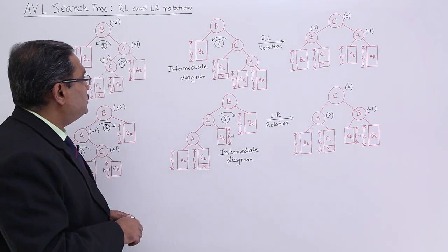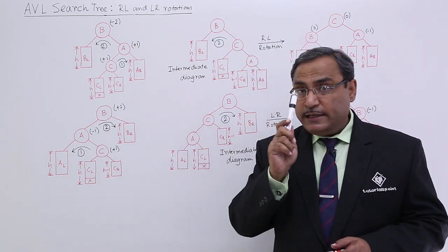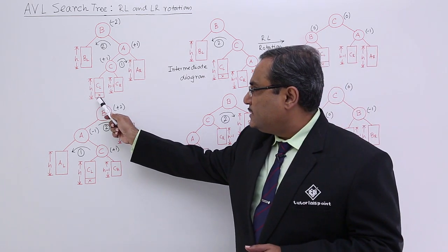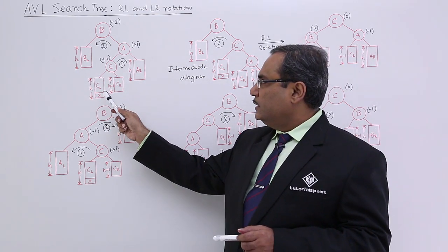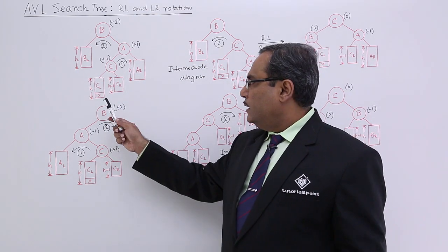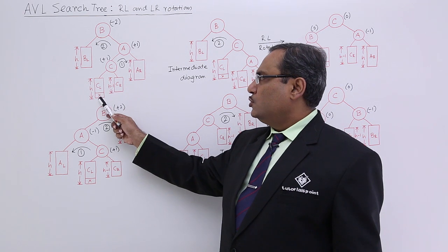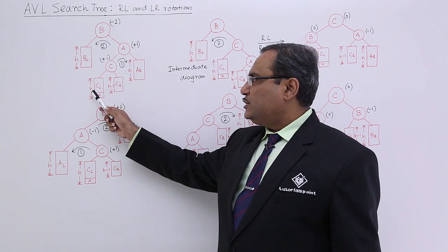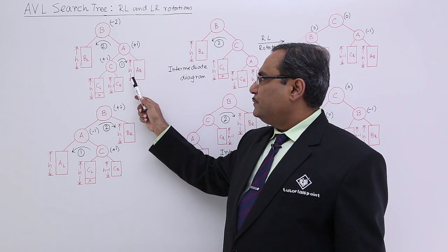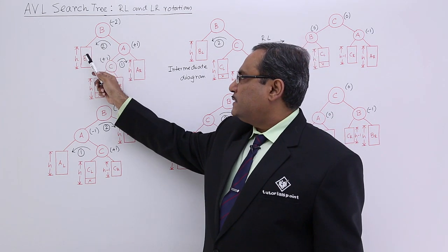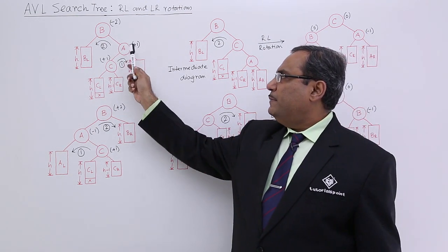Let us suppose this is the initial AVL search tree after insertion of element X. After insertion the tree has got a shape like this. This is the C left sub tree. X total height is H, C right sub tree is H minus 1. So before inserting X it was H minus 1 plus 1, which has become H. AR, that is A right sub tree, height H. This is BL, B left sub tree, with height H. In this way the tree has this shape, and A, B, C are the nodes.